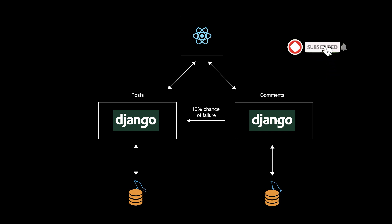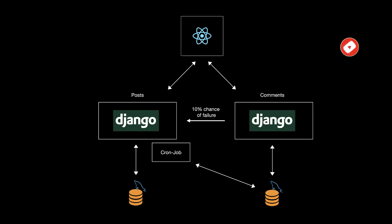In this video, we will continue the series of Python microservices. This time, we will add cron jobs to synchronize the data between the two microservices. In the previous video, we had an HTTP request that had a 10% chance of failure. In this video, we will add a cron job that will synchronize the missing information between these microservices.